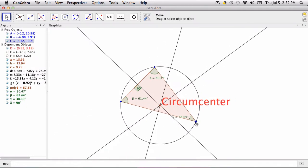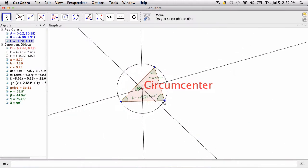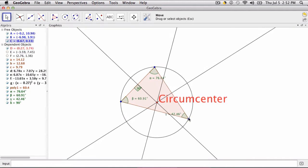And it goes through one of the vertices, no matter what that triangle looks like, that circum-circle always goes through all of the vertices.